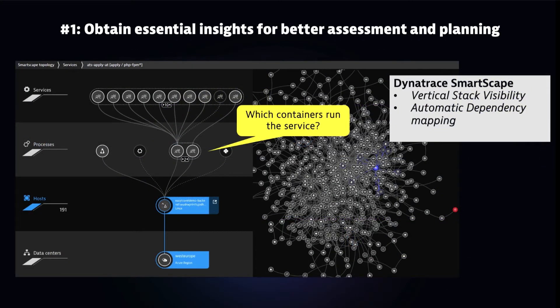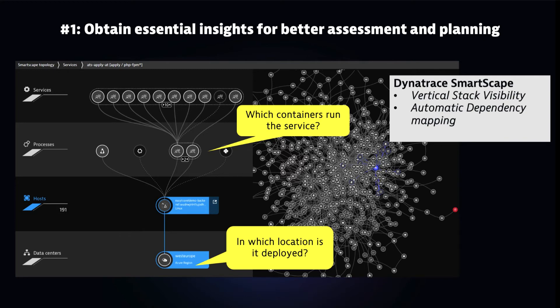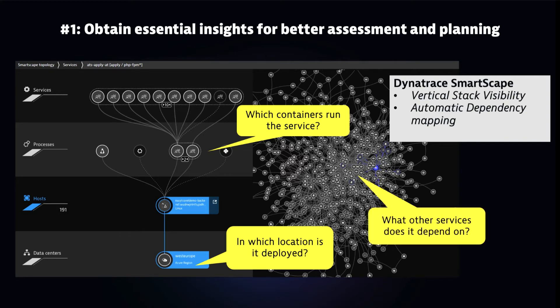Starting with insights for planning, we have SmartScape technology with vertical stack visibility and automatic dependency mapping through PurePath technology. This allows you to see what's happening between and across services. All of this is automatic, letting you understand where things are running and what dependencies exist. You can identify cloud data centers as well as on-premise data centers — a great automatic topology map.